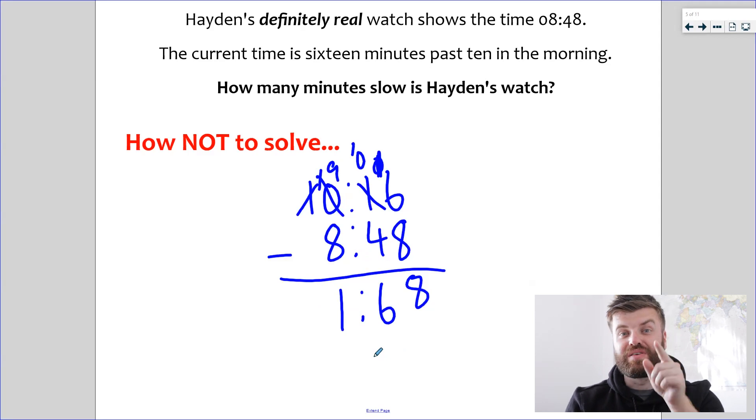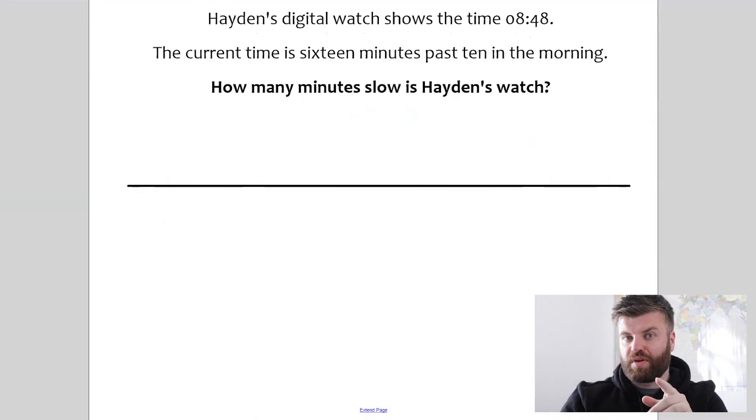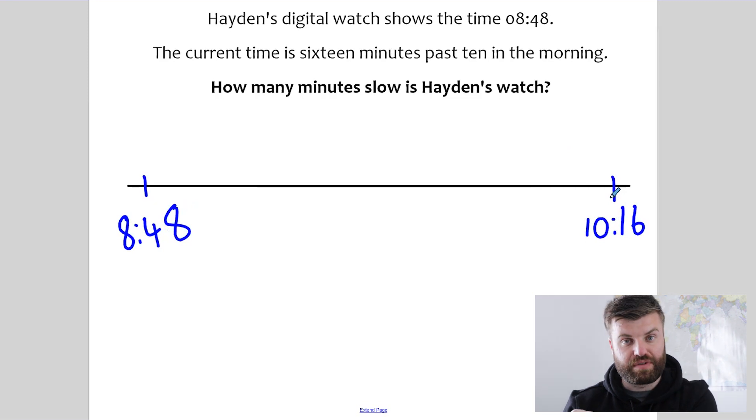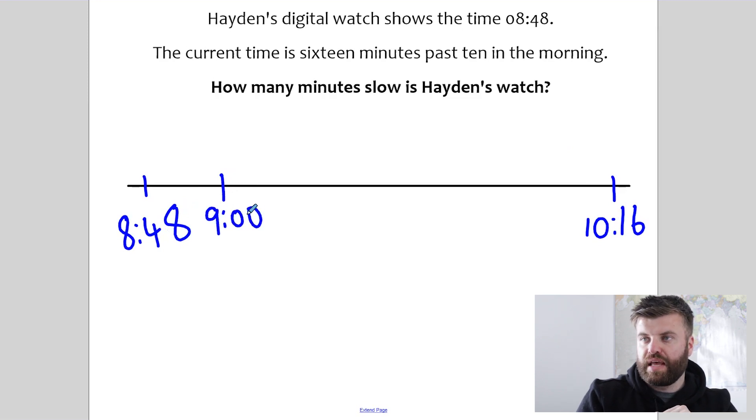That is not how we solve these questions. Let me show you a method where you get the right answer every single time. Let's use a timeline and this will work every single question you have to do. So Hayden's digital watch shows the time 8:48. Let's whack that at the front because that's the earliest time. And the current time is 16 minutes past 10. So we'll make that 10:16. And quite simply, we have to do jumps to find the difference. How do you do this? Well, the first job is to just jump straight to the next hour. So the next hour here will be 9 o'clock. Now, knowing that there are 60 minutes in an hour, I can use my number bonds to know 48 plus 12 is 60. So that's 12 minute jump.